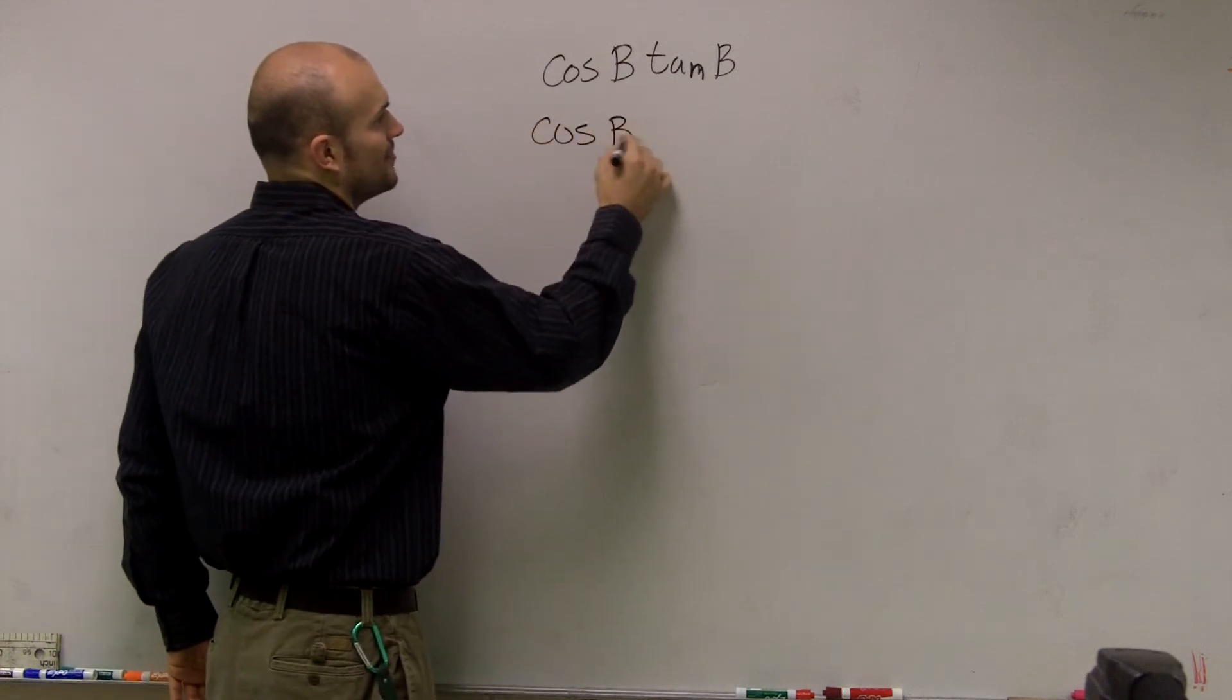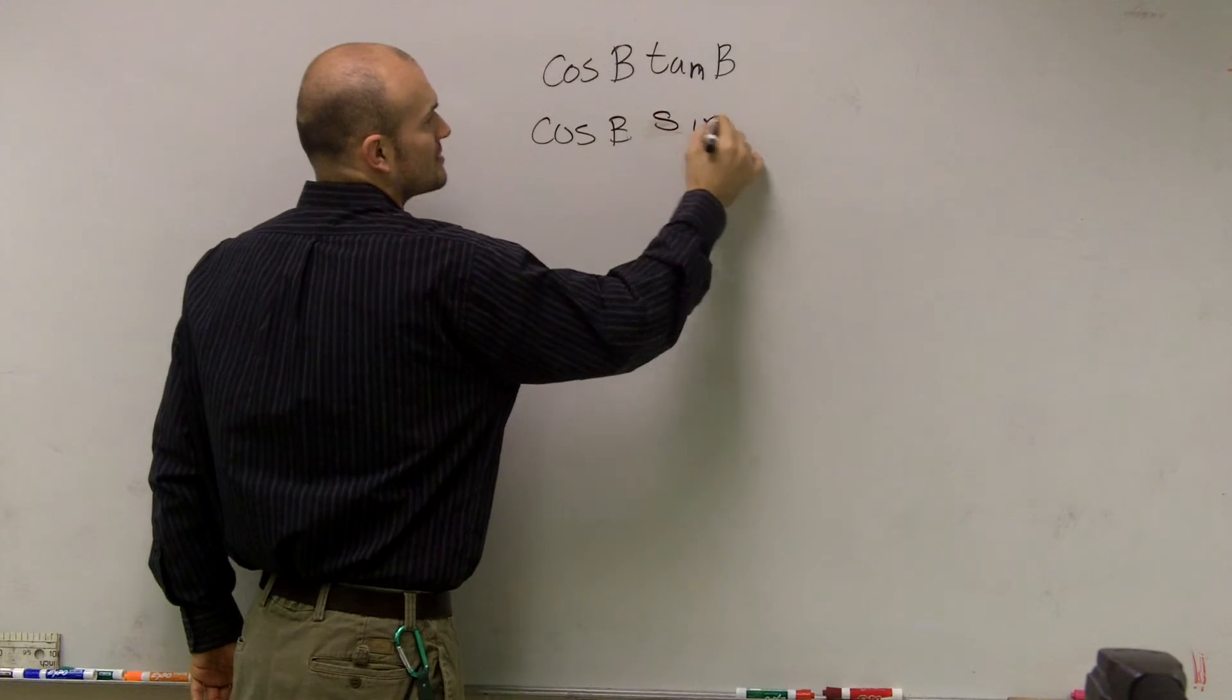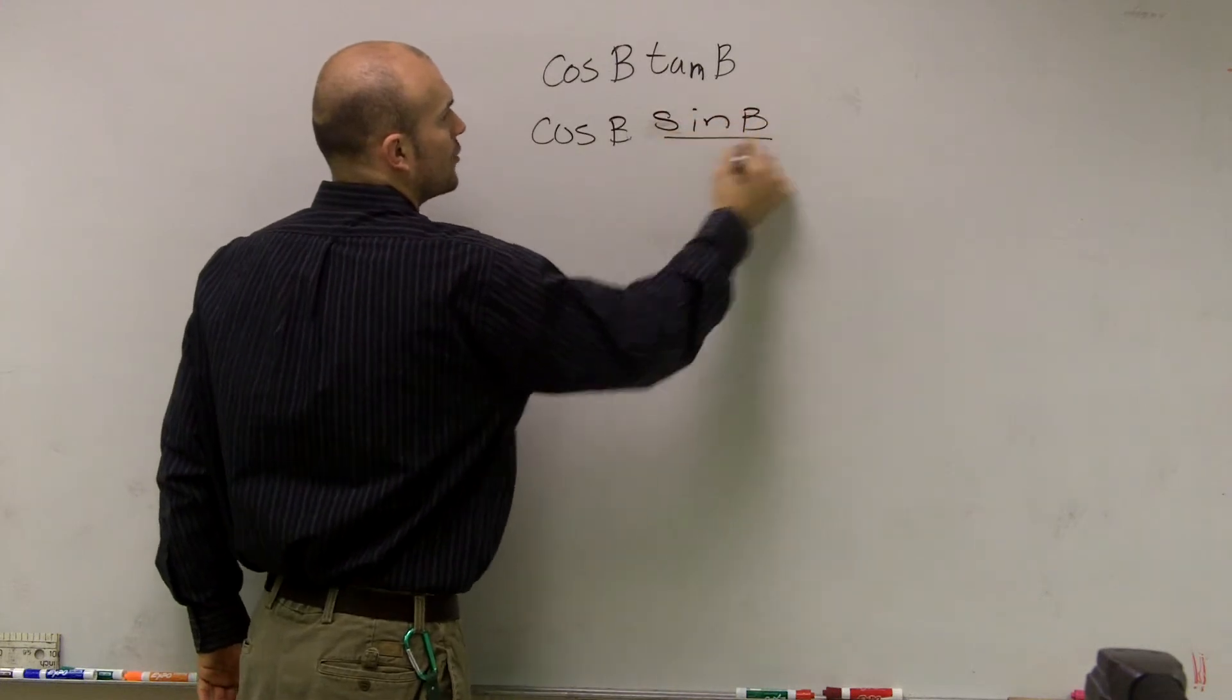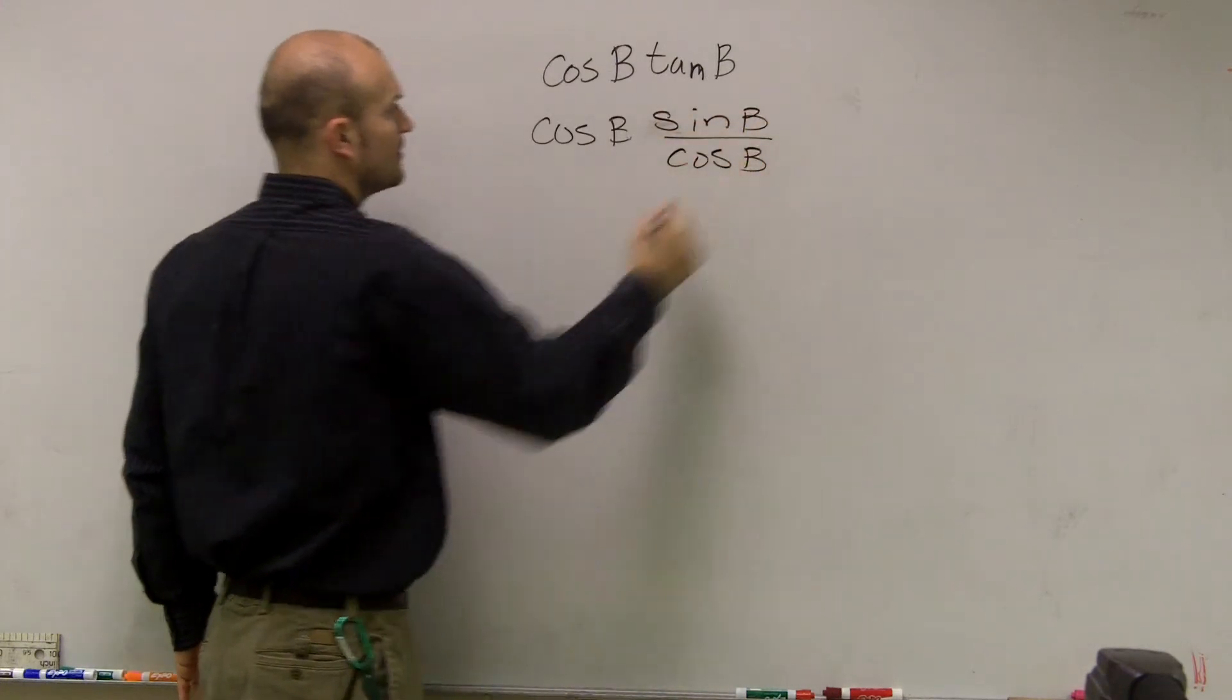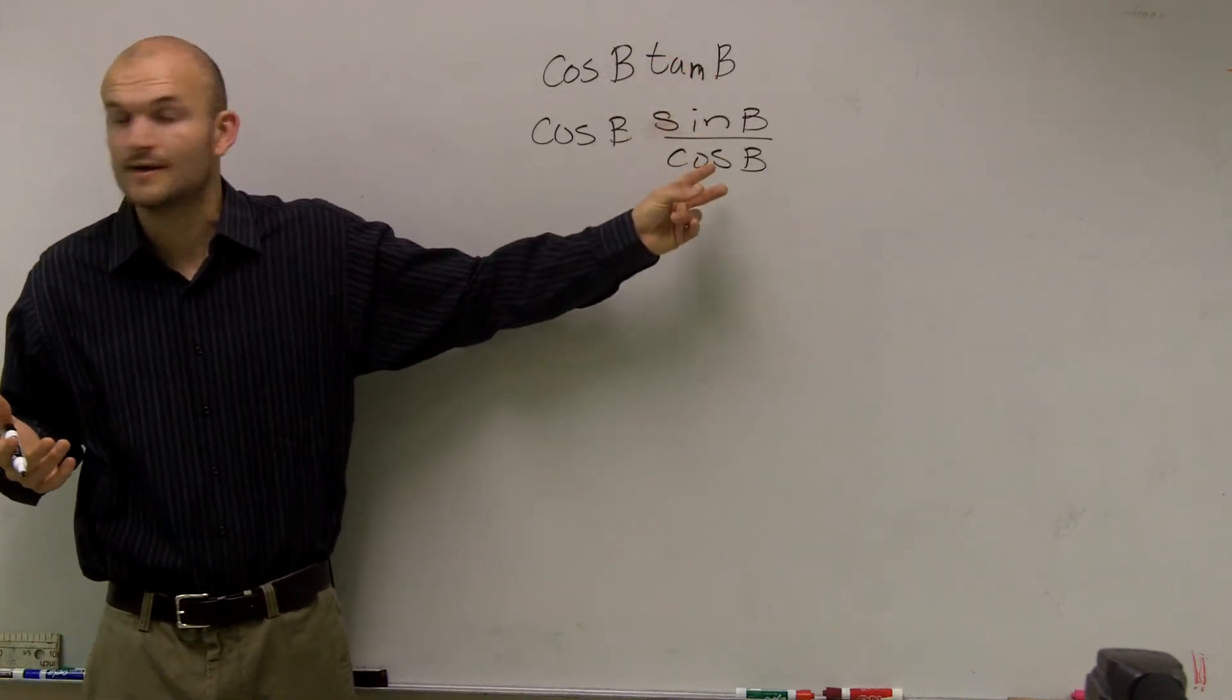So I'll have cosine of B times sine of B over cosine of B. Why did I change tangent? Well, because remember, tangent represents sine over cosine of B.